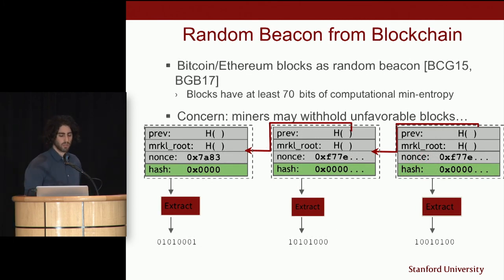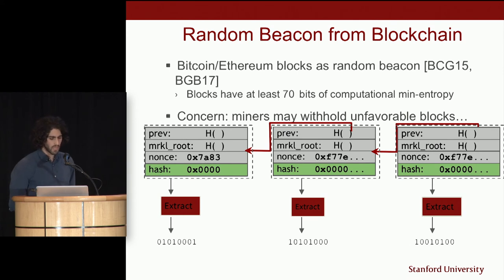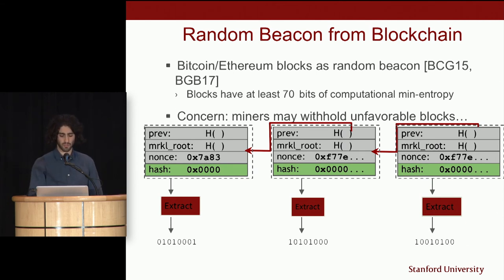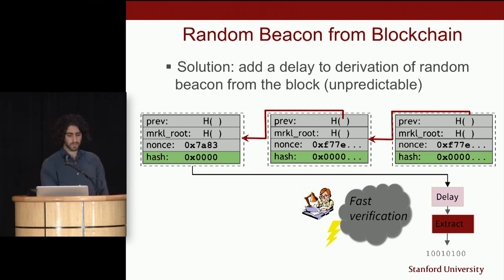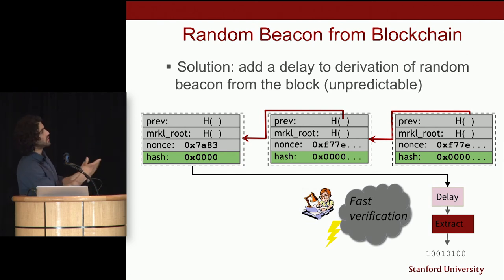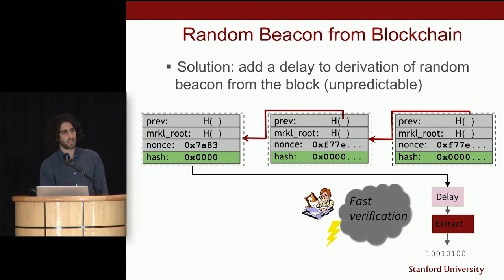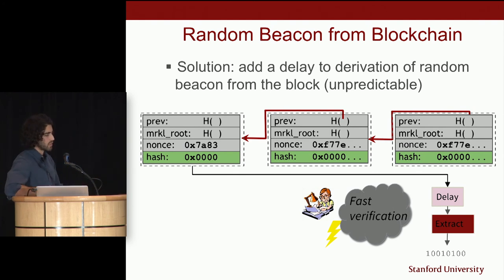Estimates say that Bitcoin blocks have at least 70 bits of computational min-entropy. The suggestion is to add a delay to the derivation of a random beacon from a block: the block is posted, and several blocks later we learn the actual beacon value. The idea is that a miner can't predict how their block will influence the beacon, so there's very low incentive to withhold — the blockchain will have moved on by the time they find a new solution.